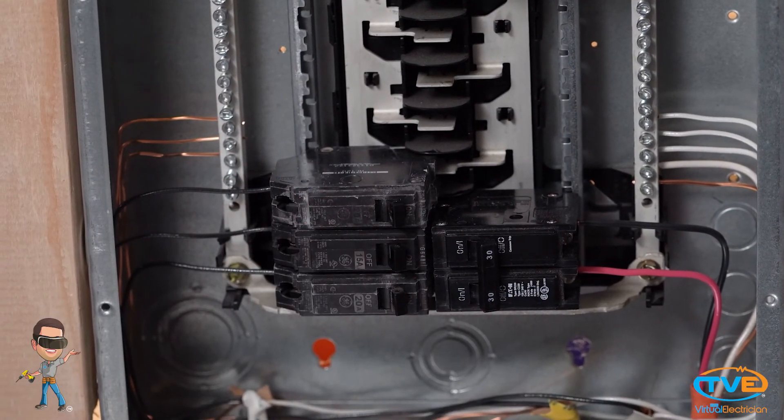Now, if you have properly identified everything, it should be no problem putting it all back together. When you're finished, turn the breaker back on, install the new cover plate, and you're done.